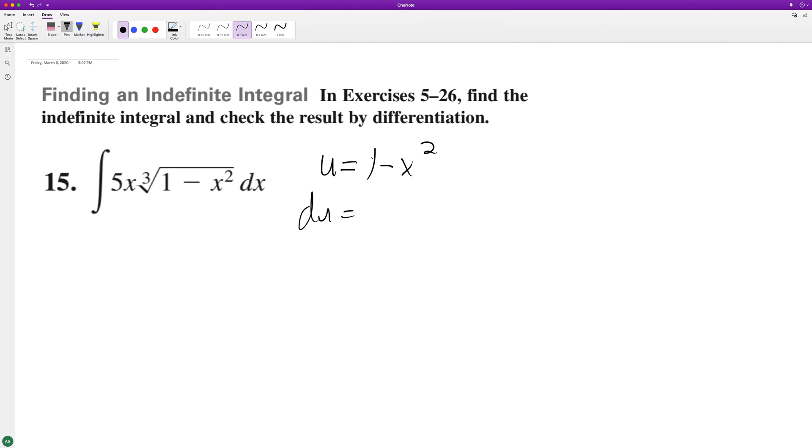So du will be equal to negative 2x. So to get this du equal to dx, we need to multiply by negative 5 halves.